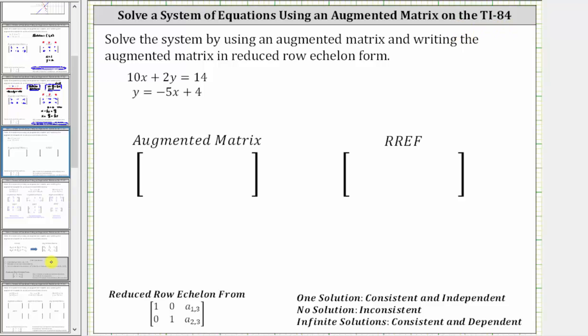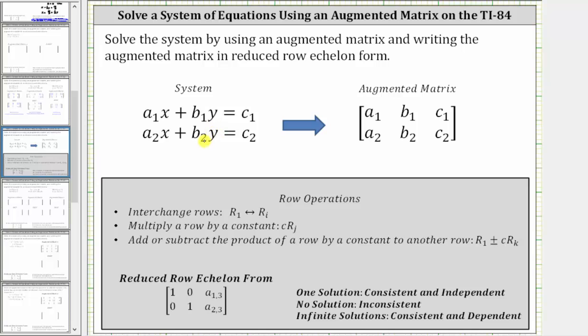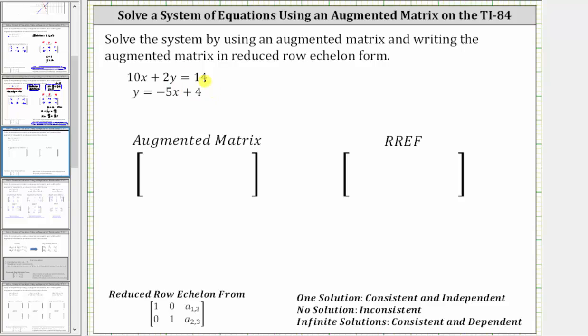But it is important to remember the equations must be in standard form before we form the augmented matrix, where we have the x and y terms on the left side and the constant on the right side. So looking at our system, notice how the second equation is in slope intercept form, not standard form. To write the equation in standard form, we need to add 5x to both sides and write the equation as 5x + y = 4.